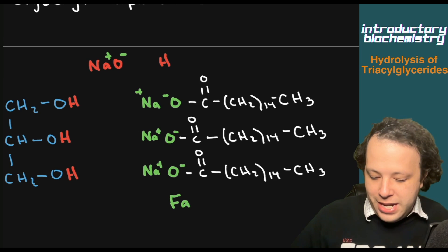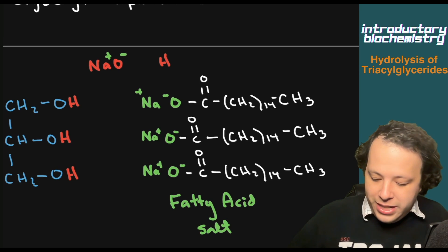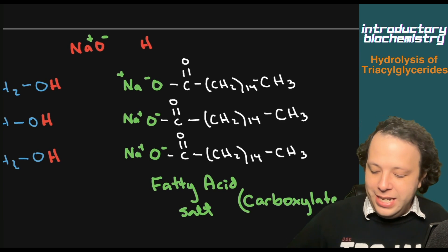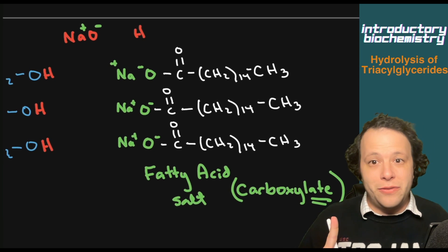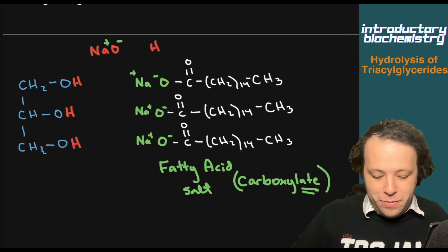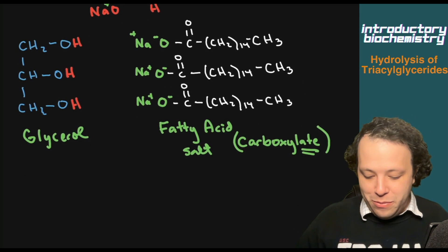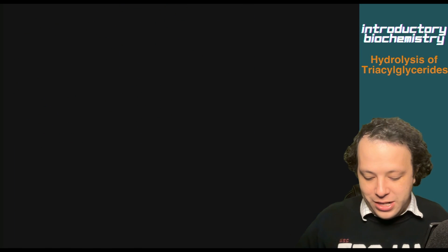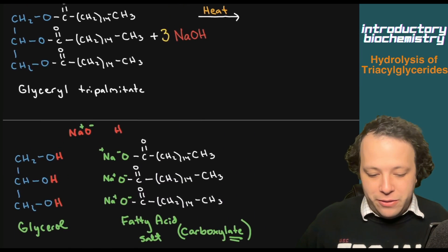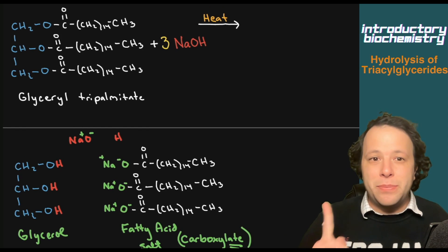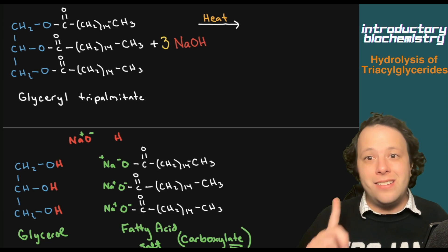This is a fatty acid salt, also known as a carboxylate, with an A-T-E ending to refer to the salt form. The other product is glycerol, and these are your two products in the final reaction. The complete reaction shows your big fatty acid split into the fatty acid salt and glycerol.